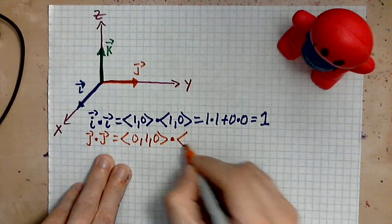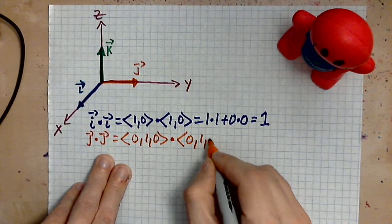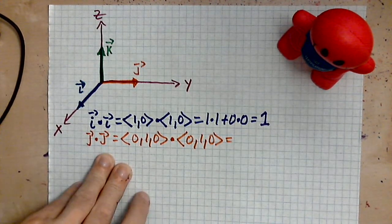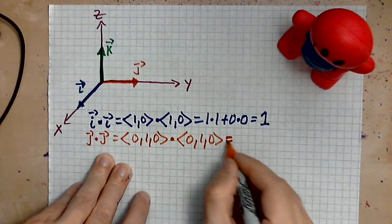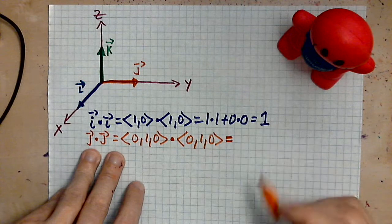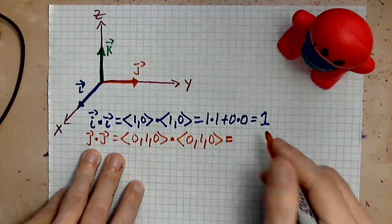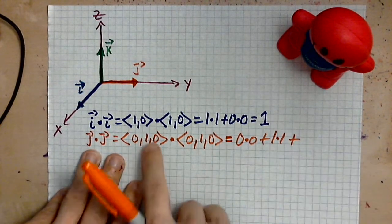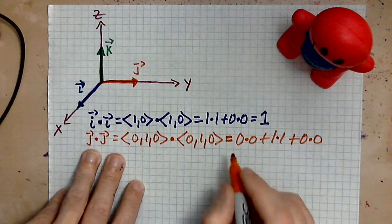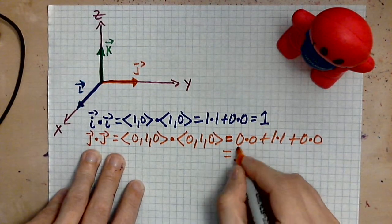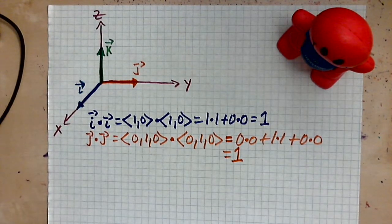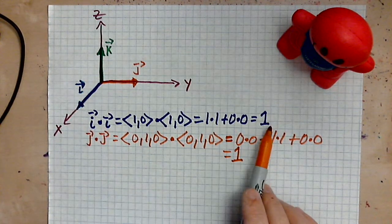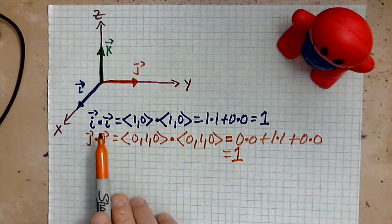And you're dotting this with 0, 1, 0. Now you apply the definition of the dot product. That means the first 0 times this 0, and you add to it the 1 times the 1, and then you add to that 0 times 0. And all that remains at the end is the number 1. So J dotted with J is just 1, just as I dotted with I is 1. It doesn't matter whether you're talking about a 2D vector or a 3D vector.